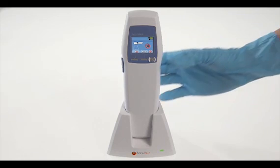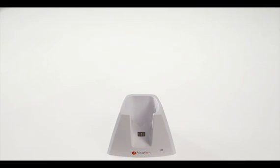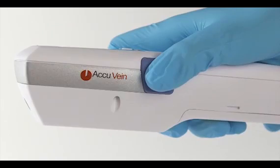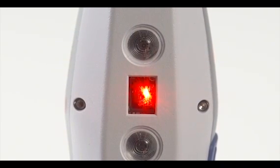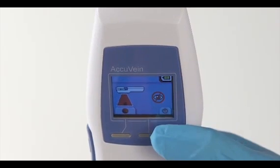To use the AccuVein AV400, remove it from the charging cradle. To turn on the vein light, press the blue button found on the left side of the device. To turn off the device, press the circular button on the top.